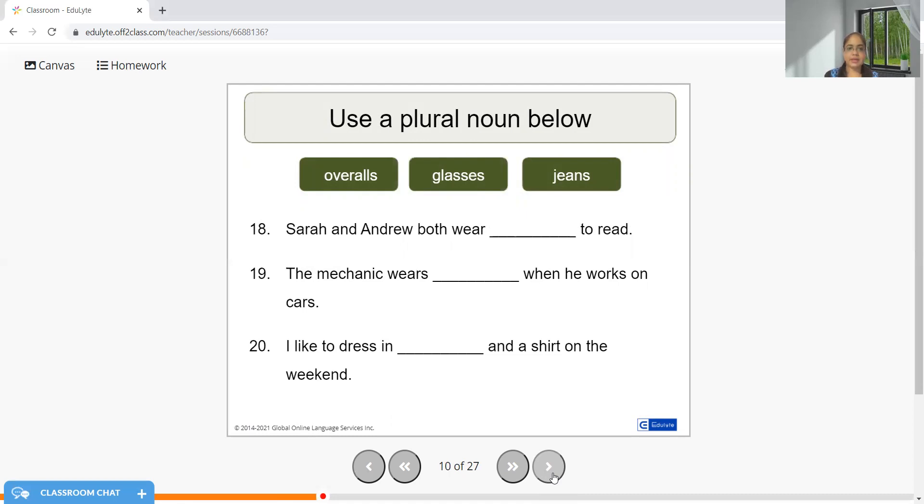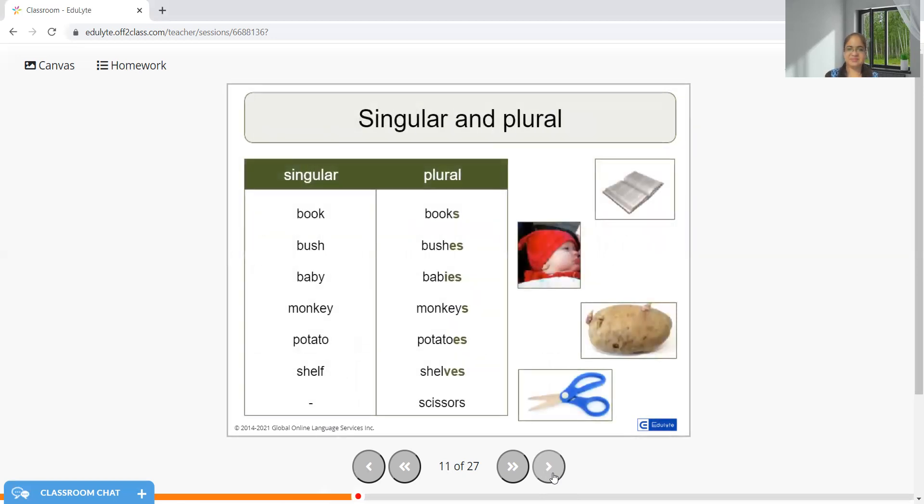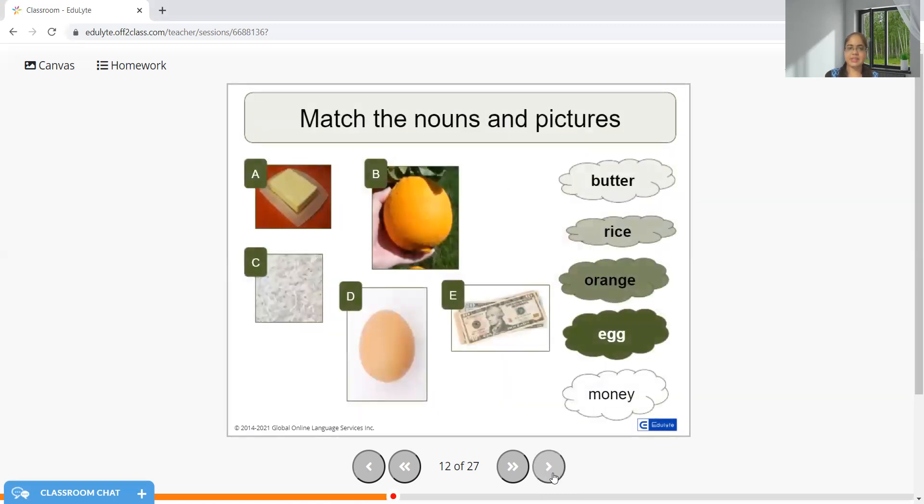I'm sure this is giving you great clarity. Sarah and Andrew both wear glasses to read. The mechanic wears overalls when he works on the cars. I like to dress in jeans and a shirt on the weekend. From today, please don't use jean; it is jeans. These words have singular and plural separately, but the examples which I shared in the previous slide need to be carefully used because they only will exist in their plural form.